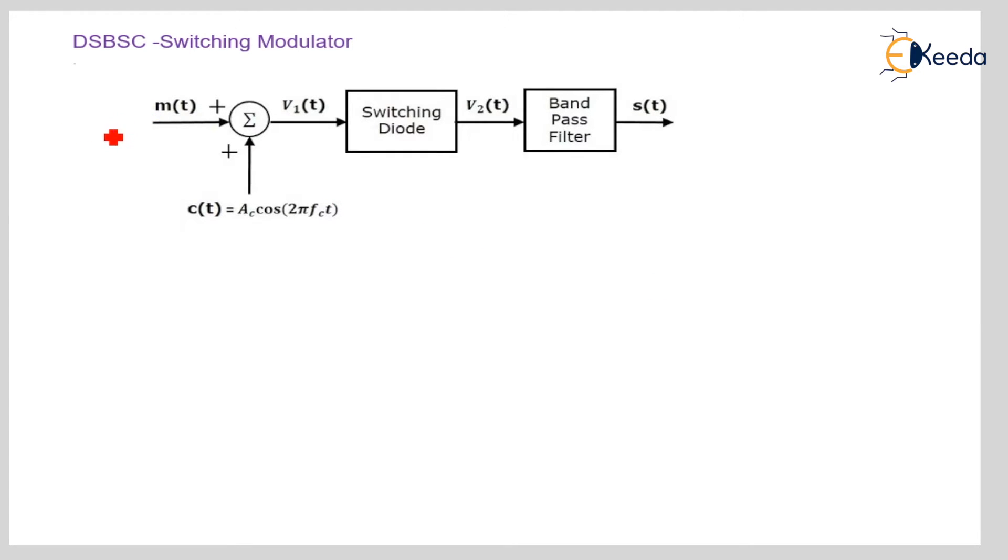So here M of T is the modulating signal. Here this is the carrier signal. Modulating signal and the carrier signal both are coupled to a summing device. Output of the summing device we are getting V1 of T, which is coupled to the switching diode.